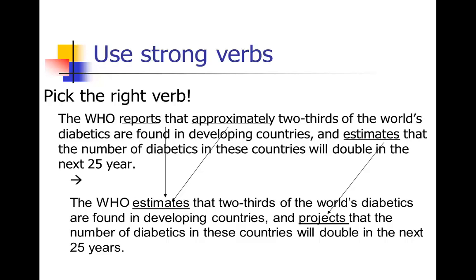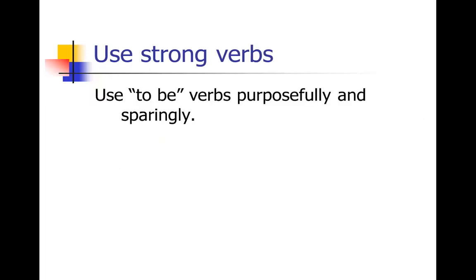When you want to use strong verbs, that means you want to use the 'to be' verbs as purposefully and sparingly as you can. You can't avoid using is, are, was, were, be, been, and am — they're going to come up a lot. The problem is that in a lot of writing, it's like every sentence has a to-be verb. You're going to see in many examples that there's a lot of overuse of to-be verbs — they're very boring. I'm going to ask you to go through your writing, underline all your verbs, and see how often you use to-be verbs. Try to reduce them. Sometimes you'll have to use them, but use them purposefully and sparingly.